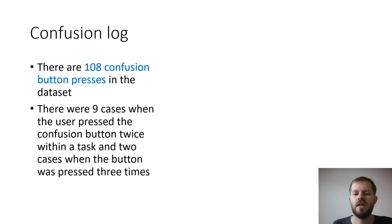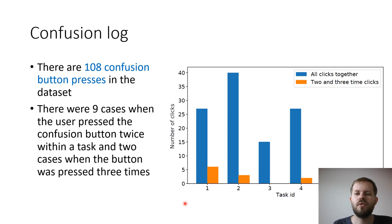This is because after clicking the button, users could continue solving the task, and when they felt confused again, they would click the button again. Here we can see a distribution of the confusion button clicks across tasks.